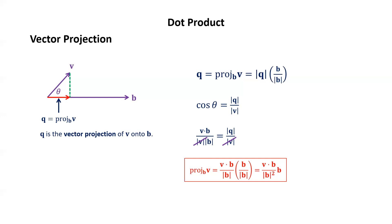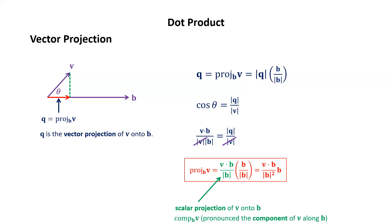The expression (v·b)/|b| has a special name: it's called the scalar projection of v onto b. We write it as comp_b(v), pronounced 'the component of v along b.' So it has two names: the scalar projection of v onto b, or the component of v along b.